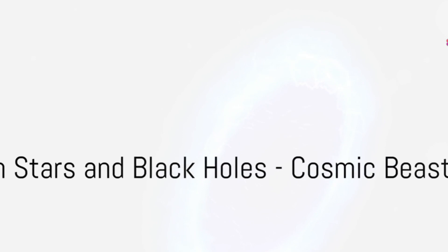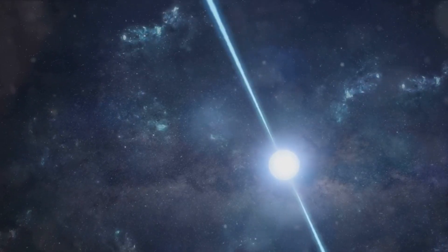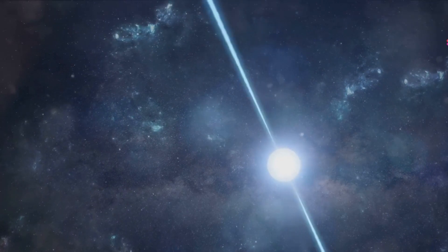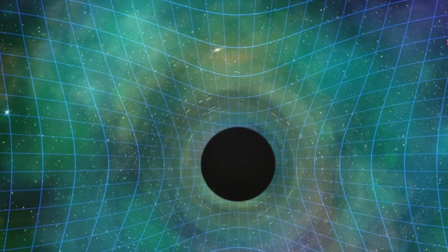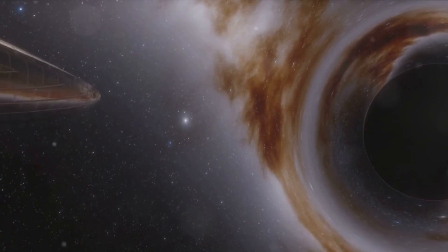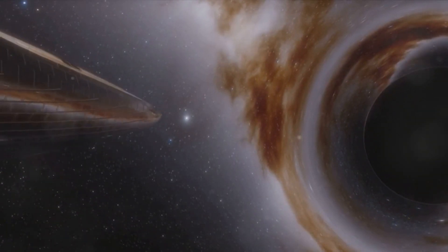Then there are neutron stars and black holes. These cosmic beasts emerge from the remnants of massive stars after supernova explosions. Neutron stars are incredibly dense, packing the mass of several suns into a sphere the size of a city. Black holes, on the other hand, are regions of spacetime where gravity is so strong that nothing, not even light, can escape.